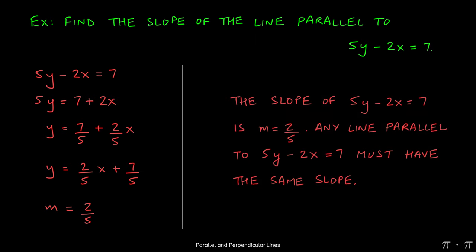Again, this is just written out in plain English. If the slope of this line, which was given to us, is 2 over 5, any line that's parallel to this line has to have the same slope.